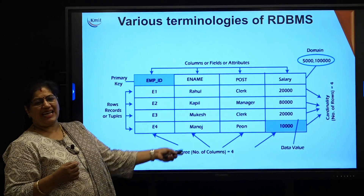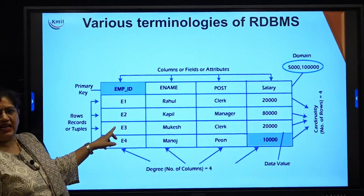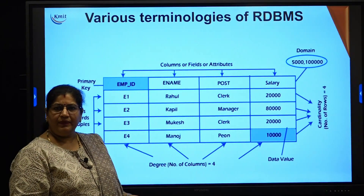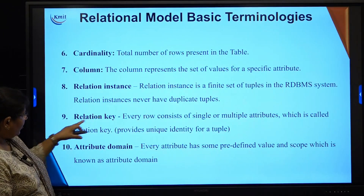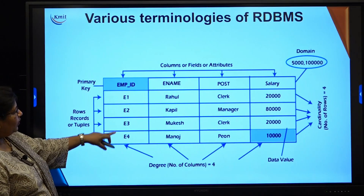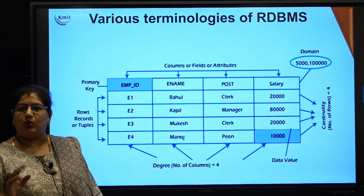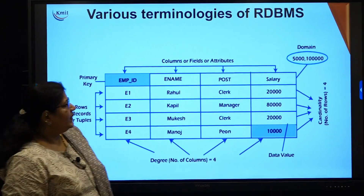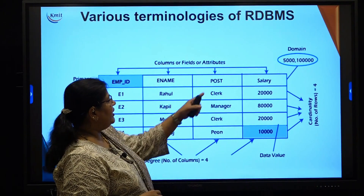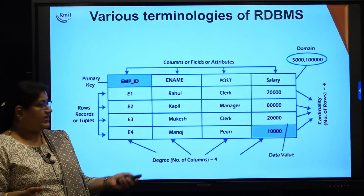Here is a sample relation with all the various terminologies applied. The employee relation has fields like employee ID, ename, post, and salary. The rows are records, also known as tuples — here we have 4 records. The degree is the total number of attributes, which is 4. The attribute domain for salary can be between 5,000 to 1 lakh, depending on what values we want to insert.